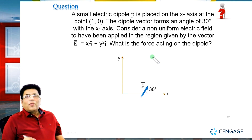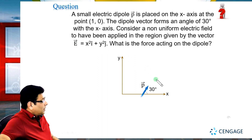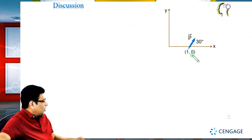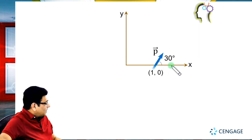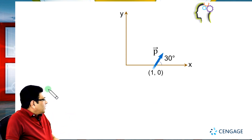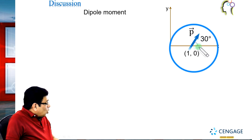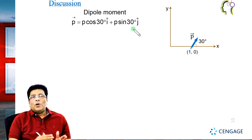We need to calculate the force on the dipole. This is the coordinate (1, 0), this is the p vector dipole moment, inclined at angle 30 degrees with the horizontal or x-axis. We can resolve the vector into components: dipole moment vector equals p cos30° î + p sin30° ĵ.